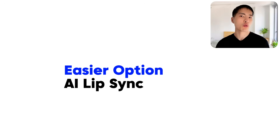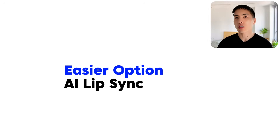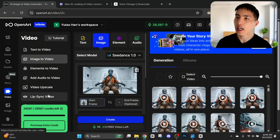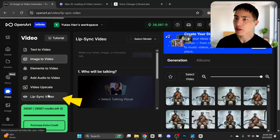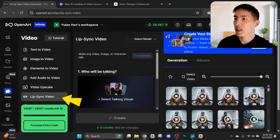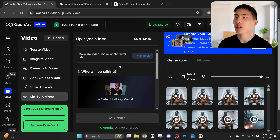If this entire process of creating the AI acting and dialogue sounds a little complicated, don't worry — we can also use a much simpler lip syncing tool where you won't need a video recording of yourself acting. All you need is an audio recording and we can make the AI character talk. In the video tab on OpenArt, if I go to lip sync video, I can animate an image of my character talking with just a single audio file.